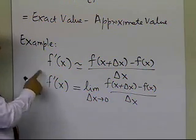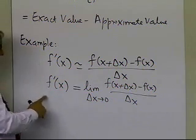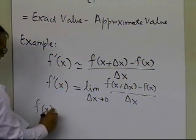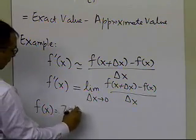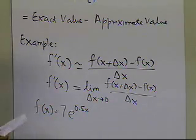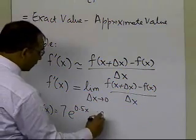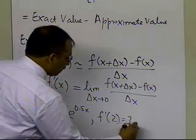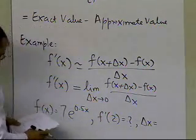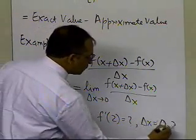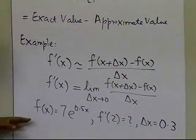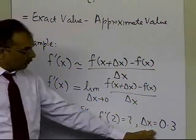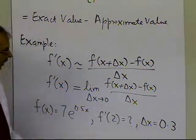Because we need both numbers to calculate the true error, let's put in specific functions and numbers. Suppose the function is given as f(x) = 7e^(0.5x), you want to calculate f'(2), and you choose delta x equal to 0.3. So you're given the function, where to evaluate the derivative, and a finite value of delta x — in this case 0.3.